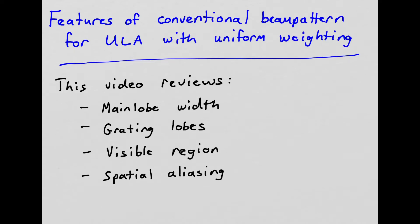Hello and welcome to another array processing video. This video briefly discusses some features of the conventional beam pattern for a uniform line array with uniform weighting. Specifically, we're going to talk about main lobe width, grating lobes, the definition of the visible region, and spatial aliasing.